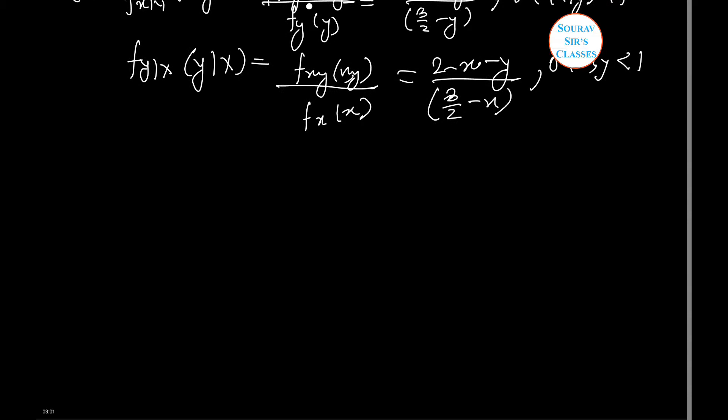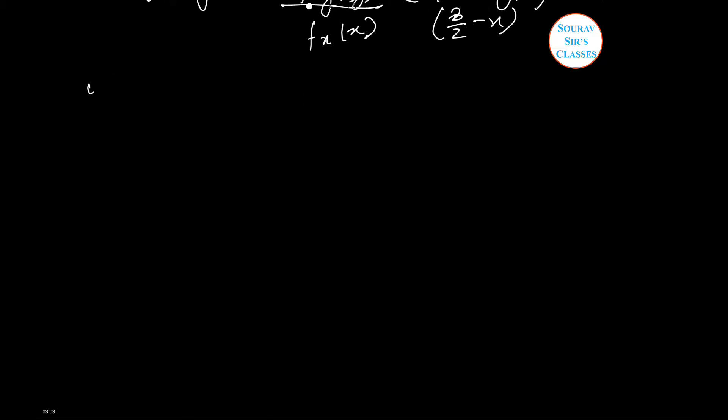Now let us do a bonus question, that is let us find the variance of x. Therefore variance of x can be figured out by first taking out expectation x.